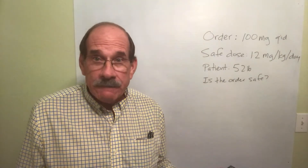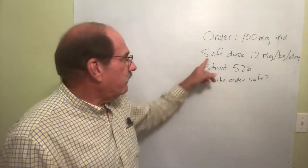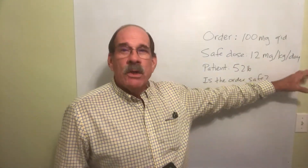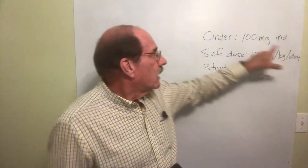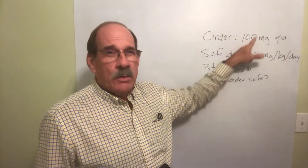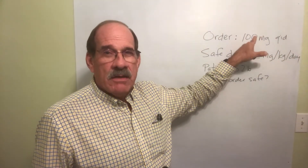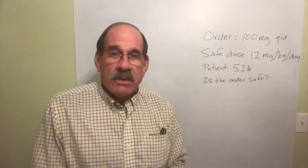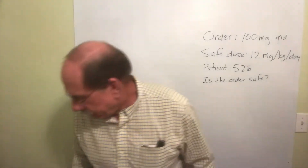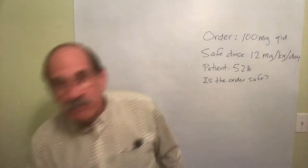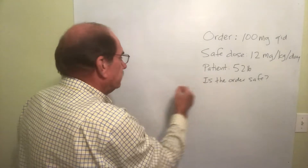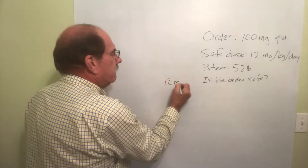So a safe dose is going to be 12 milligrams per kilogram per day. What you're going to do is ignore the ordered amount for just a moment — we're not going to work with that number yet. We're going to see if that number is safe or not. The math we're doing is the same thing you've been doing for the past couple of weeks. We'll take 12 milligrams per kilogram per day — and that's the way you need to write it.